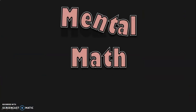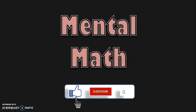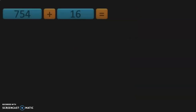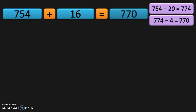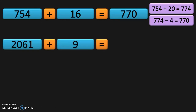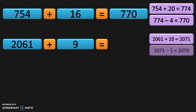Now we are going to do the mental math sums. 754 plus 16: this can be done as plus 20 minus 4. So 754 plus 20 is 774, and 774 minus 4 is 770. Next sum: 2,061 plus 9. This can be done as plus 10 minus 1. So 2,061 plus 10 is 2,071, and 2,071 minus 1 is 2,070.